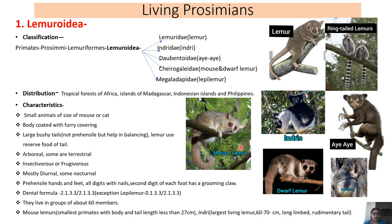The indri is the largest lemur. Cheirogaleidae contains the small-sized dwarf lemur. Indriidae, which we discussed, is the largest living lemur. The tail in lemurs is notable. Megaladapidae includes the sportive lemur, and Lemuridae includes ring-tailed lemurs. These are different kinds of lemurs. Their distribution is in the tropical forests of Africa, mainly on the islands of Madagascar. Lemurs are also found in the Indonesian islands and Philippines.